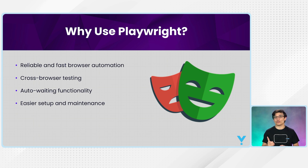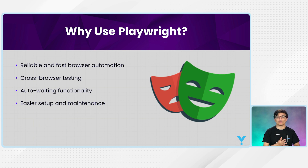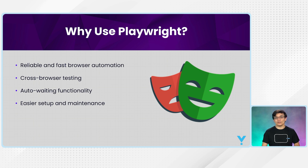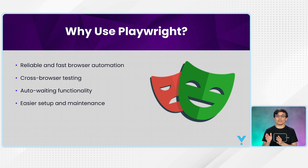Selenium replaced QTP and grew to have a larger and larger community, becoming the number one automation tool. Now, if you compare Playwright with any existing automation tools, Playwright is much simpler, more reliable, and the fastest automation tool. It is also open source — Microsoft made it public in early 2021, so it's free.